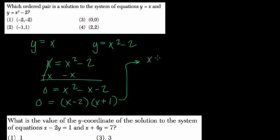So here, x minus 2 equals 0, and x plus 1 equals 0. The idea is when two things multiply to get 0, one or the other or both are 0.